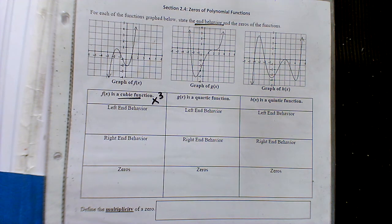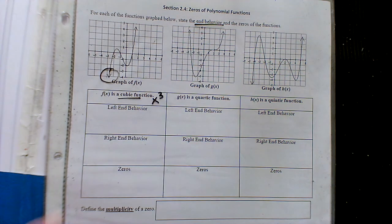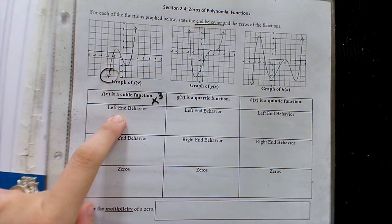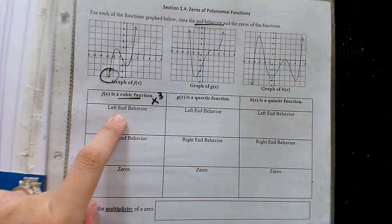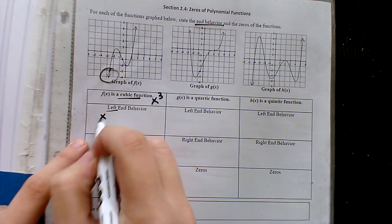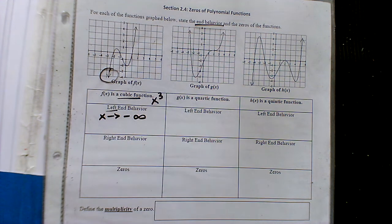If we're going to practice identifying the left end behavior and the right end behavior — if you look at the graph, what direction is the left side going towards? Down. Mathematically, negative infinity. So when we describe the left end behavior, if you're moving to the left on the graph, the x values are decreasing, getting closer towards negative infinity.